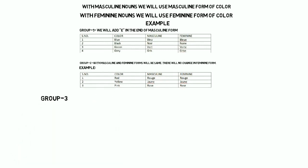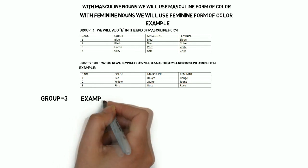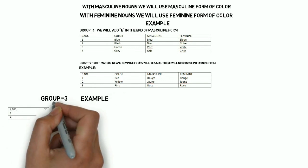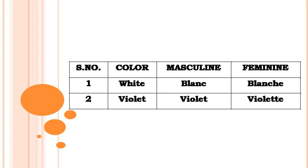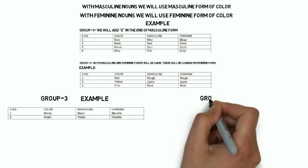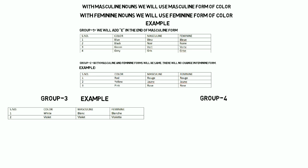Now there is a third category of colors where the spellings change a lot in the feminine form. The first color is white. White in French is blanc. But in the feminine form, we will not only add 'e' but also 'h', so the feminine spelling becomes B-L-A-N-C-H-E, pronounced as blanche. The next color in the same category is violet. Violet in French is violet, and its feminine form will be violette — it also takes an extra 't'.